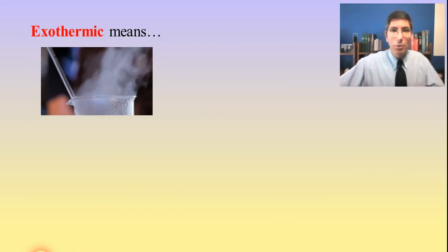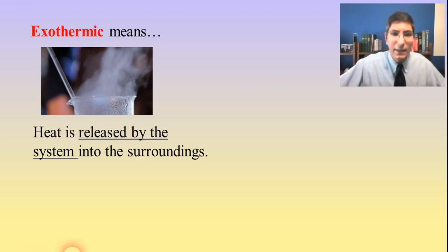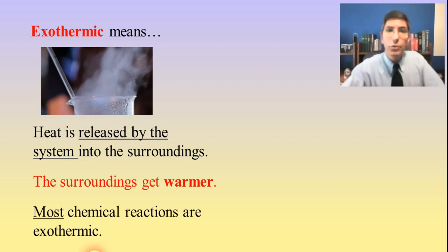When we say exothermic, what does that mean? Well, exothermic essentially means that we are releasing heat by the system into the surroundings. And so if you have, for example, a reaction taking place in solution, that means that the surroundings, including the water that's in the beaker, is going to get hotter. And so when we think exothermic, normally we think the surroundings get warmer, things are going to get hotter. Most chemical reactions are exothermic.